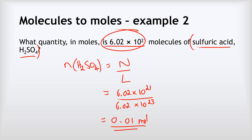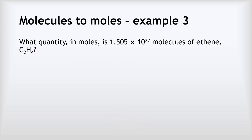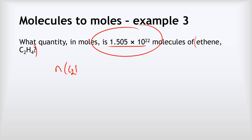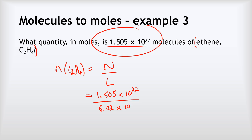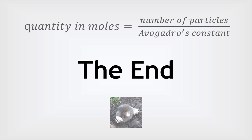Last example: What quantity in moles is 1.505 × 10²² molecules of ethene C₂H₄? Again, the compound's formula is unimportant. n(C₂H₄) = 1.505 × 10²² ÷ 6.02 × 10²³ = 0.025 moles.